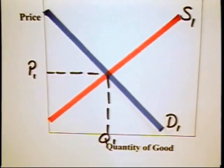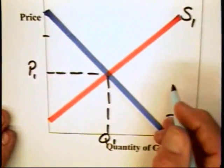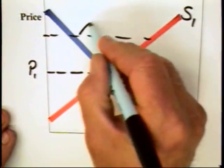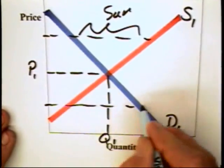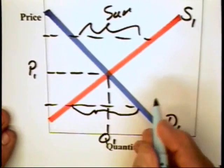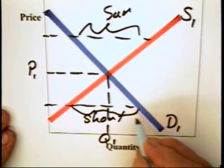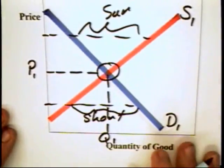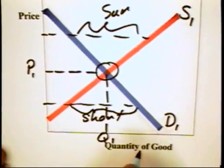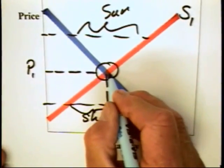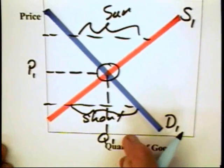We noted in the previous module that competitive markets clear. That is, we move to a graph like this and we observe that if the price were above P1, there would be a market surplus right there. And if the price were below that, there would be a shortage equal to that distance right there. And as a consequence, the price would move to P1, the quantity would move to Q1. And as a result, the quantity demanded equals the quantity supplied. The market clears.